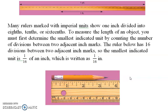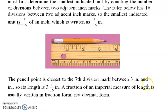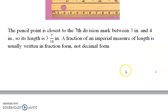The pencil point is closest to the seventh division mark between 3 inches and 4 inches. So that allows you to see that that means 3 inches and 7 sixteenths. So 7 sixteenths, as you can see the tip of the pencil is right here, and that would be 7 sixteenths. This would be 8 sixteenths which is a half. And you don't write these in decimal form, these are put in fraction form.